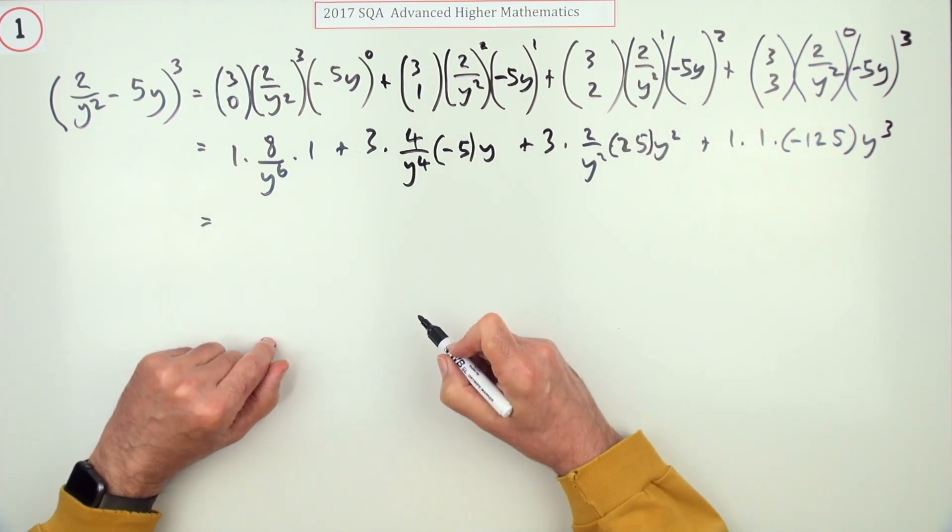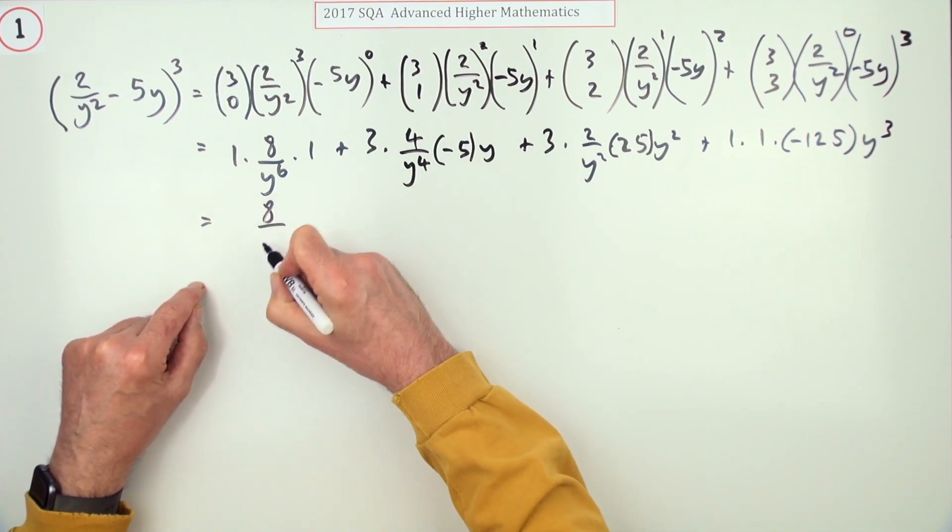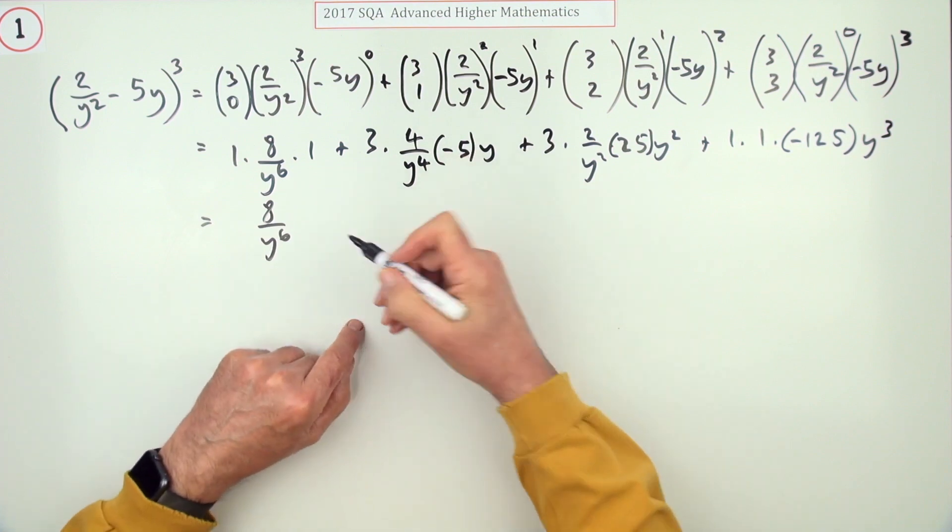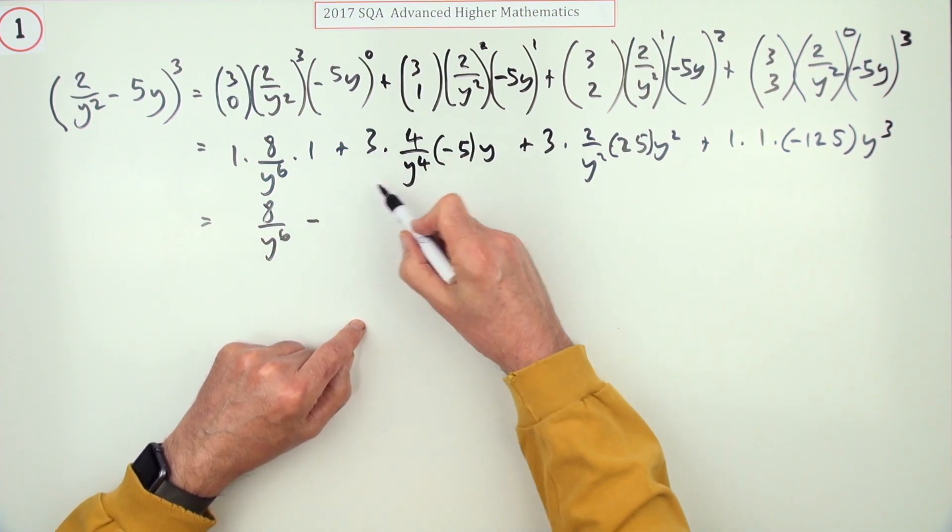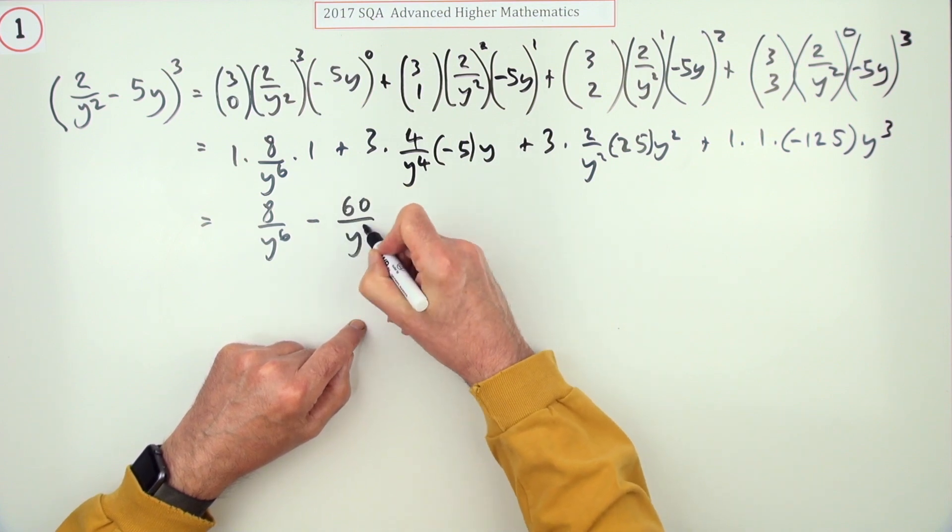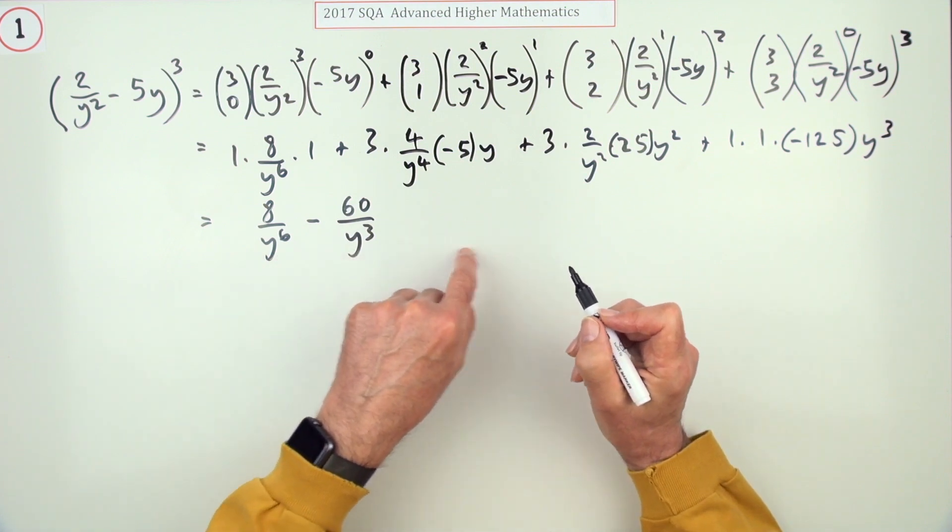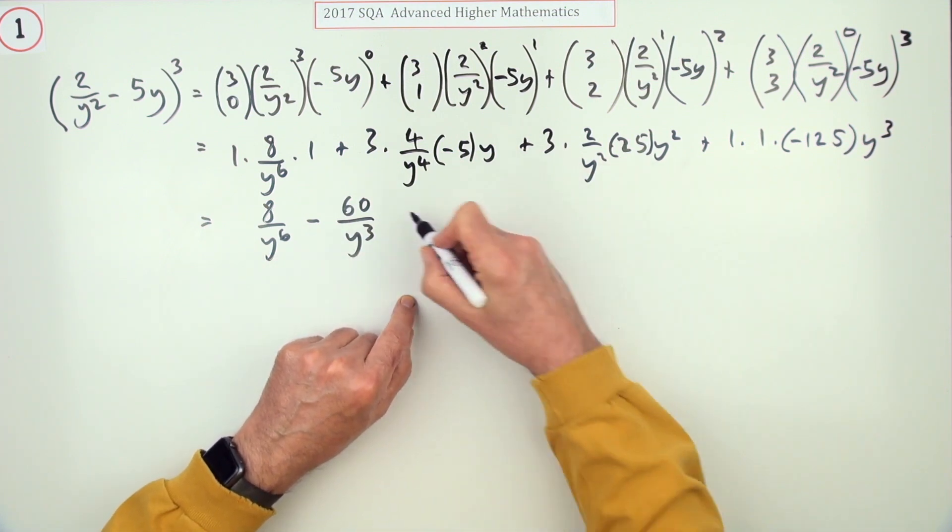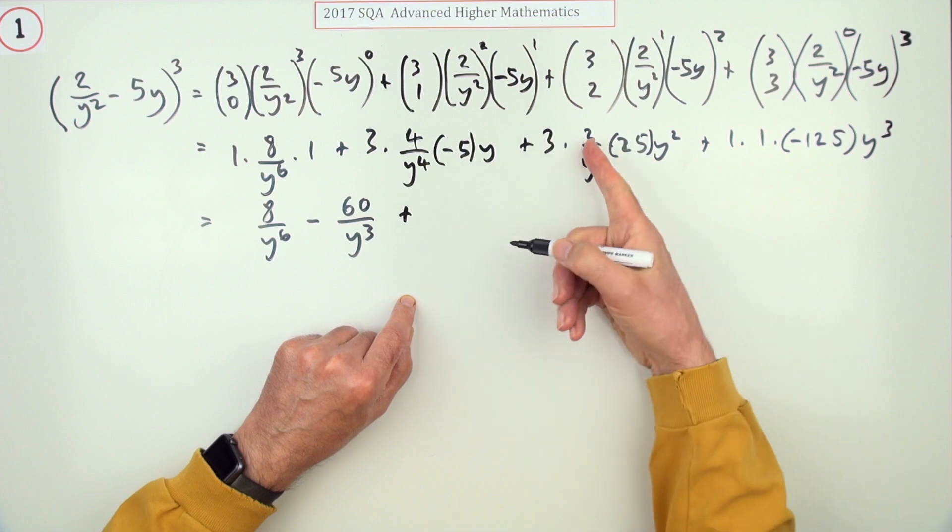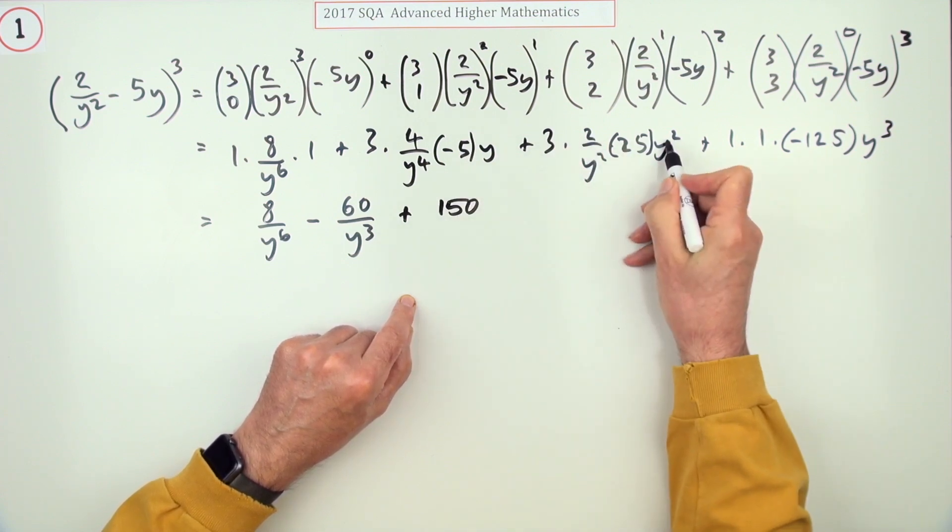So the first one is just 8 over y to the power six. Next one's going to be negative, and you're going to have 60 over y³. So that establishes a pattern—it's going to go 6, 3, 0, negative 3.